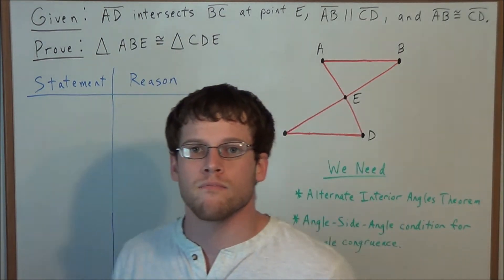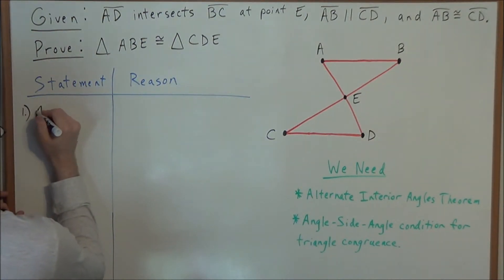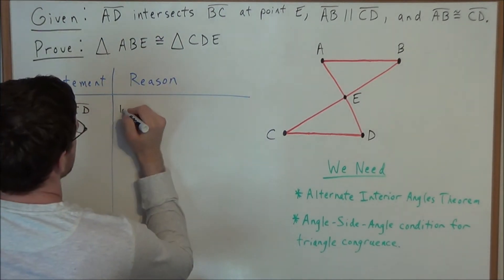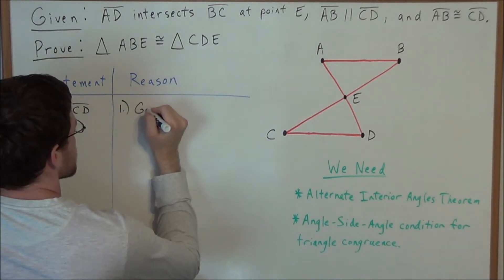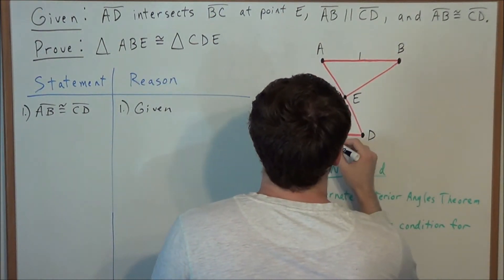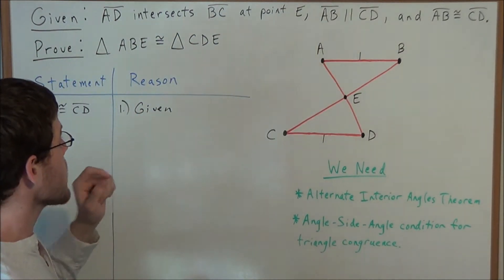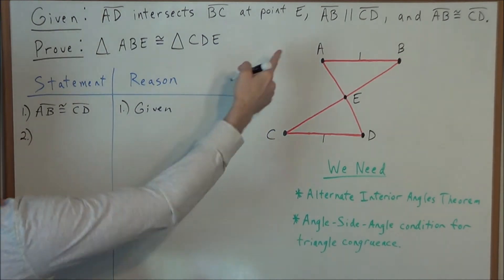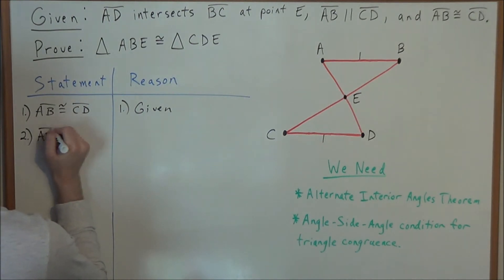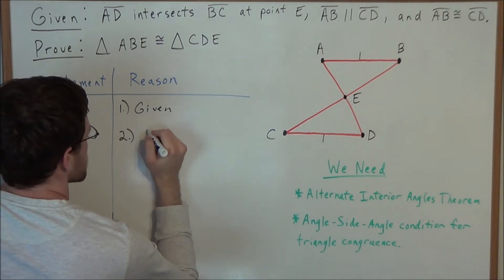The first thing we want to do with this problem is state the obvious. We were given that line segment AB is congruent to line segment CD, and the reason for this statement is that information was given. So we can make a notch right above AB and CD to indicate that these two line segments are equal in length.